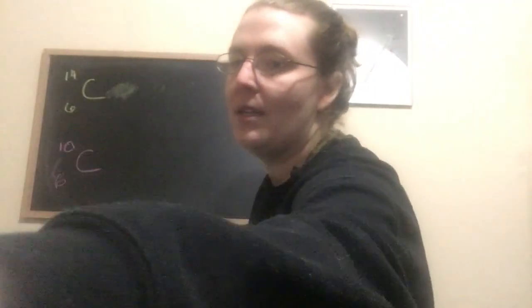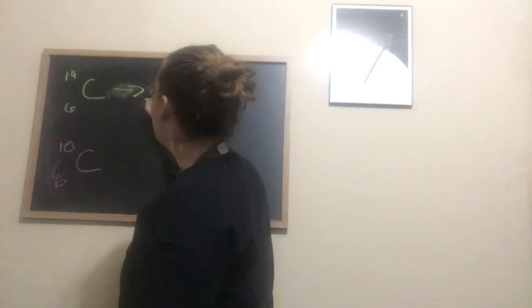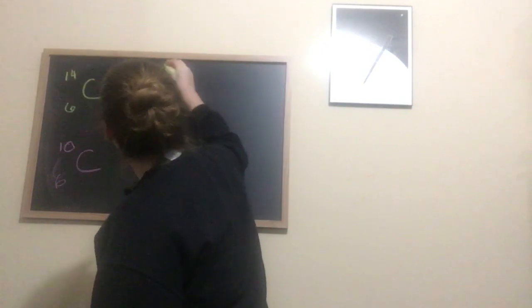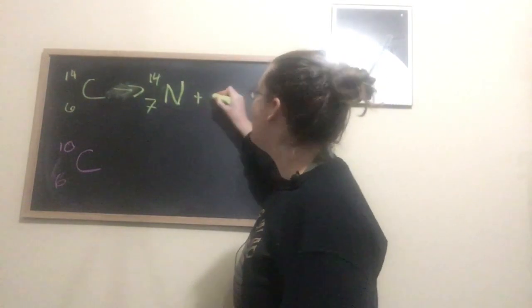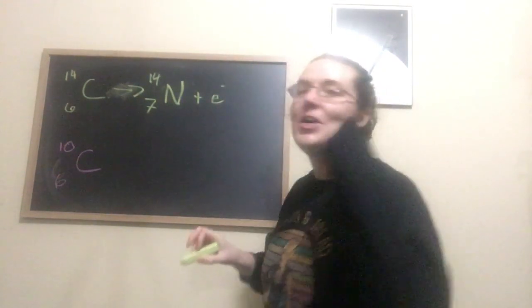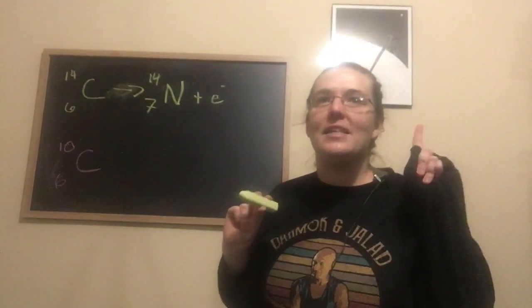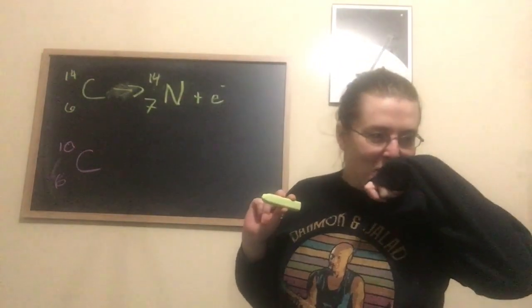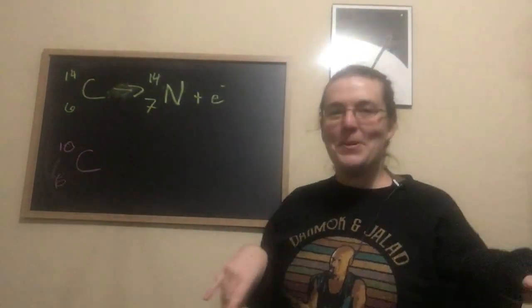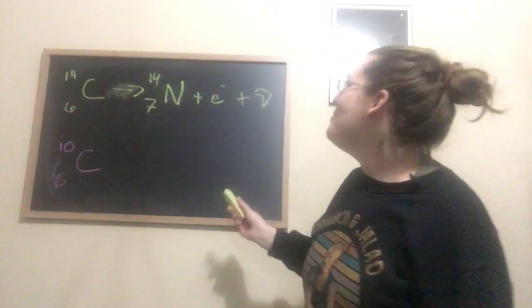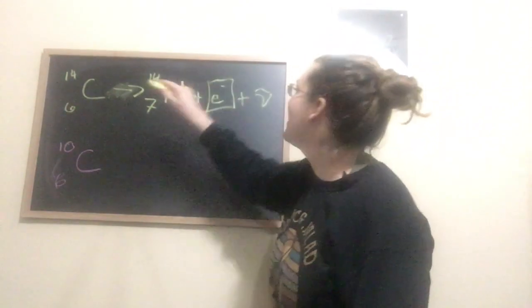So carbon 14 will beta minus decay into nitrogen 14. So carbon 14 becomes 7 nitrogen 14, and then it's going to emit an electron, which has a negative charge. It also produces an anti-neutrino. So I'm just going to draw that for my own sake, but this is the guy we're concerned with.